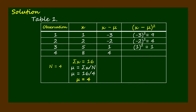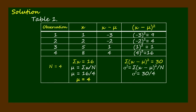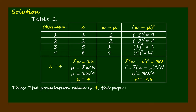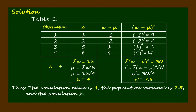Also, let's solve for the population variance by taking the summation of the quantity x minus mu squared divided by the population size. Thus, the population mean is 4, the population variance is 7.5, and the population standard deviation is the square root of 7.5, which equals 2.74.